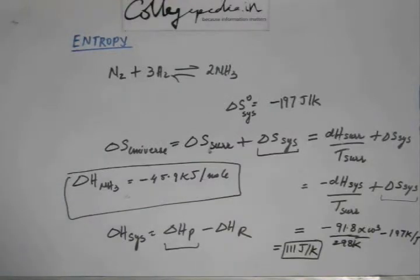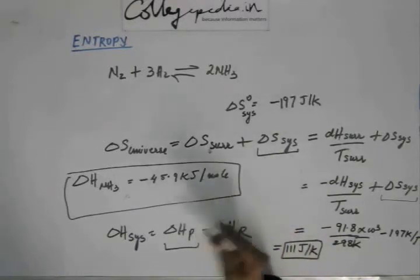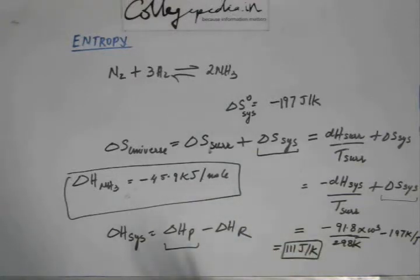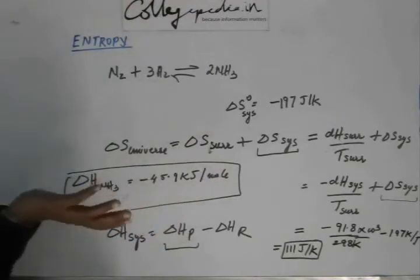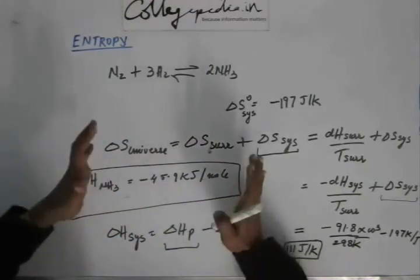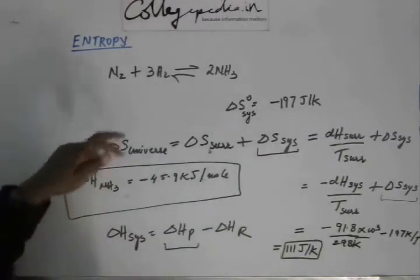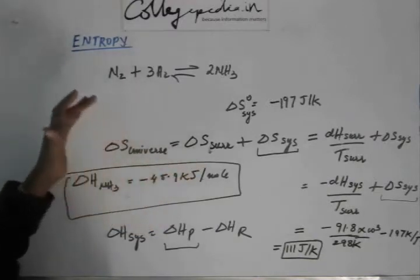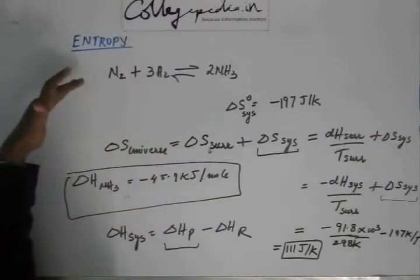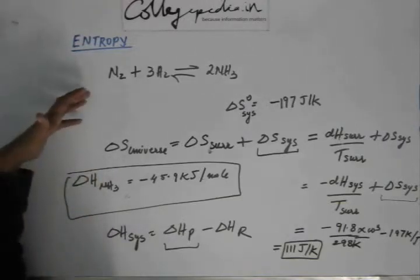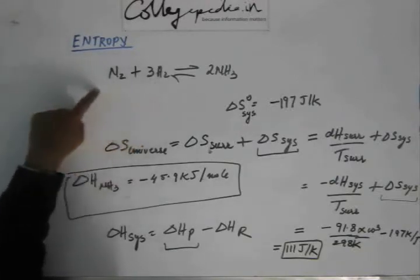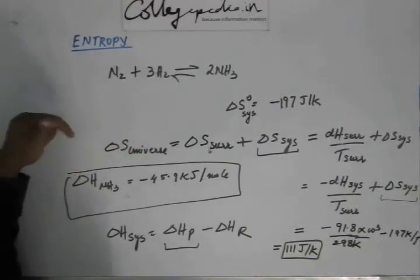Delta S of universe is the real quantity you should look at — you will not give any answer based only on delta S of system or delta S of surrounding alone. Whether they are individually positive or negative does not decide spontaneity. The whole process includes changes in both the system and the surrounding. If the cumulative change brings an increase in entropy of the universe, then it is spontaneous; if not, then even if the system's entropy increases, the reaction may not be spontaneous.